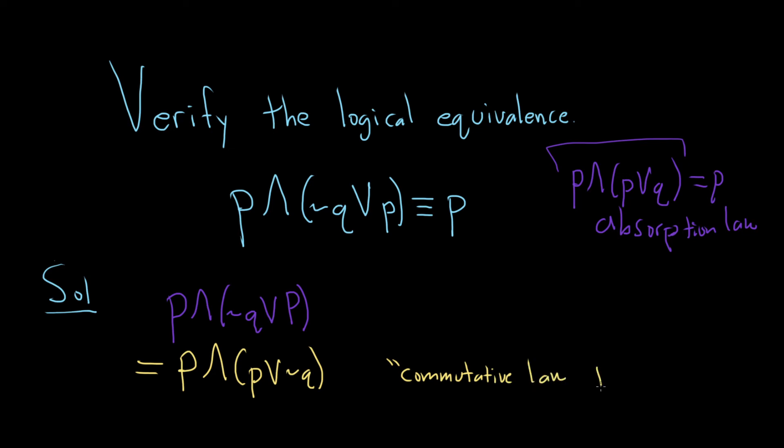The commutative law says that if you have P or Q, it's simply Q or P.